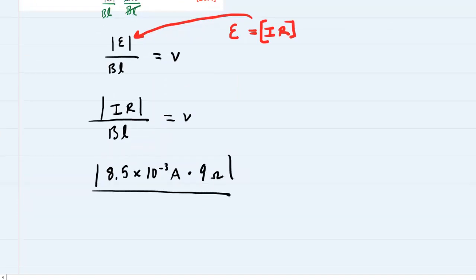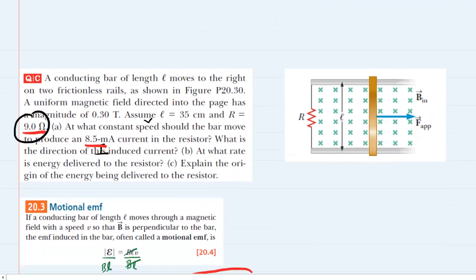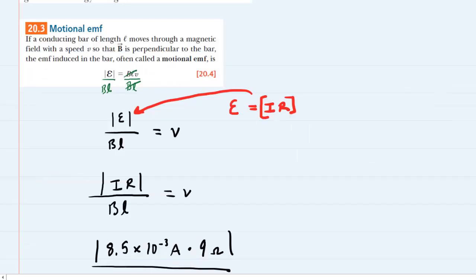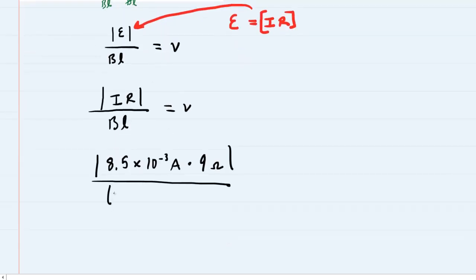And then divide by B, the strength of the magnetic field. That was given in the question as 0.3 tesla, and then the length was 35 centimeters. So on the bottom, we'll have the 0.3 tesla, and then the 35 centimeters needs to be converted into meters. So to do that, just multiply by 10 to the minus 2.